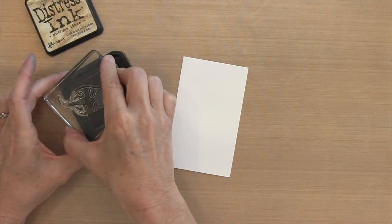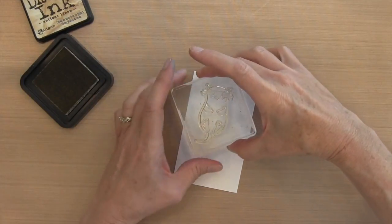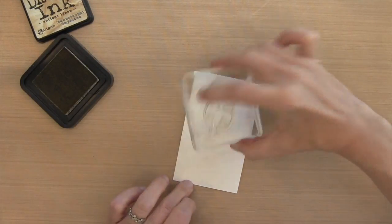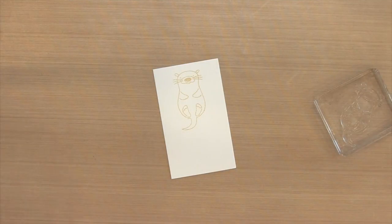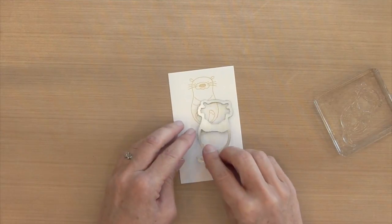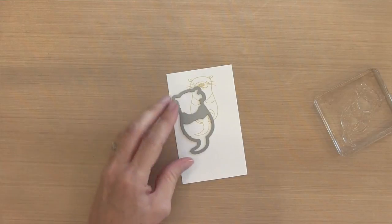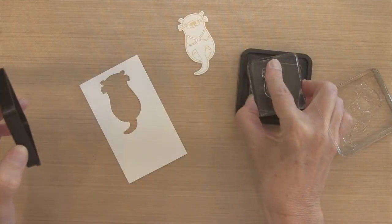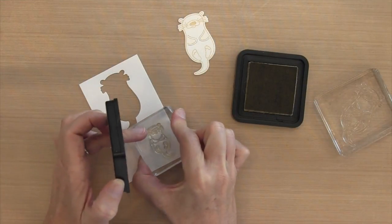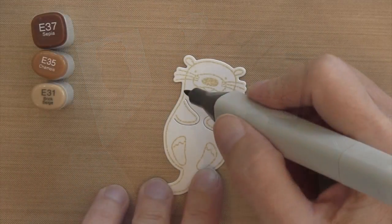Now I'm done with the background and can move on to my otters. I'm going to stamp them onto some Neenah Solar White cardstock in Antique Linen Distress Ink. For the large otter, I'm going to cut this out with the die before I color him, and this is going to cut his arms out.